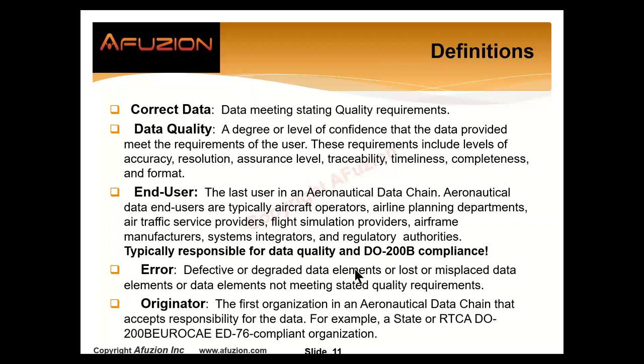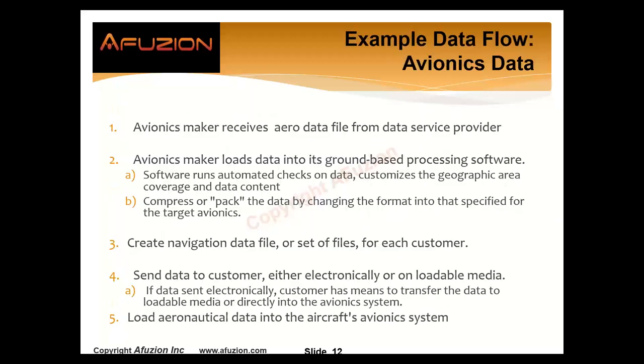The originator is the first organization in the aeronautical data chain. Remember, it's a chain — a link of originator, receiver, transmitter, receiver, transmitter. Multiple entities touch, process, and transmit that data.